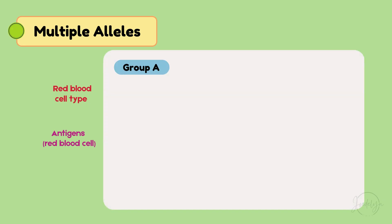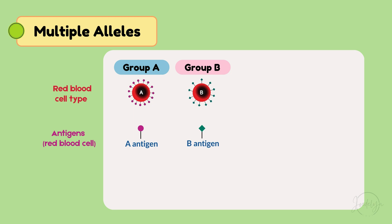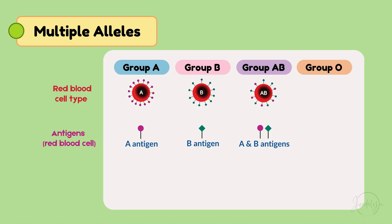Group A — you've got A antigens. Group B — you have B antigens. Group AB — lucky you, you have both A and B antigens. Group O — you've got no antigens at all.